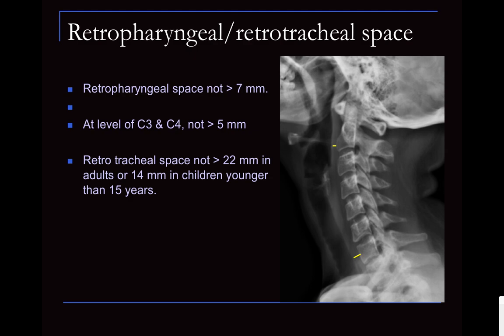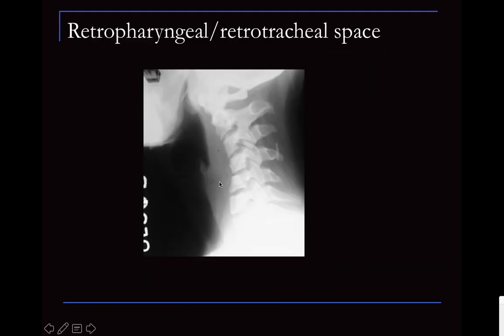Then we look at the soft tissue. When looking at soft tissue, the most important area is the retropharyngeal or retrotracheal space. We should look at the level of C2 or C3, and also at the level of C7. An easy way to remember is '7 at 2 and 2 at 7' — it should not be more than 7 millimeters at C2, and not more than 2 centimeters at C7. For example, you can very clearly see thickening of the retrotracheal soft tissue here, which could be due to pre-vertebral hematoma or pre-vertebral abscess — this is surely abnormal.